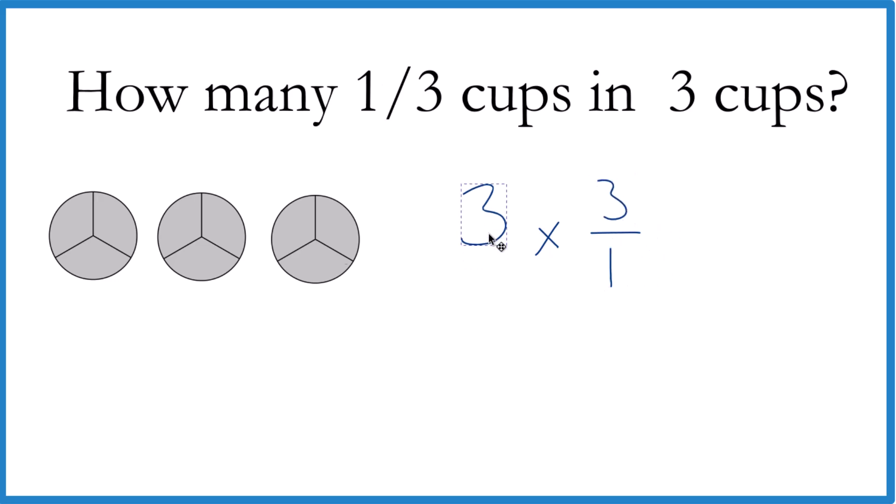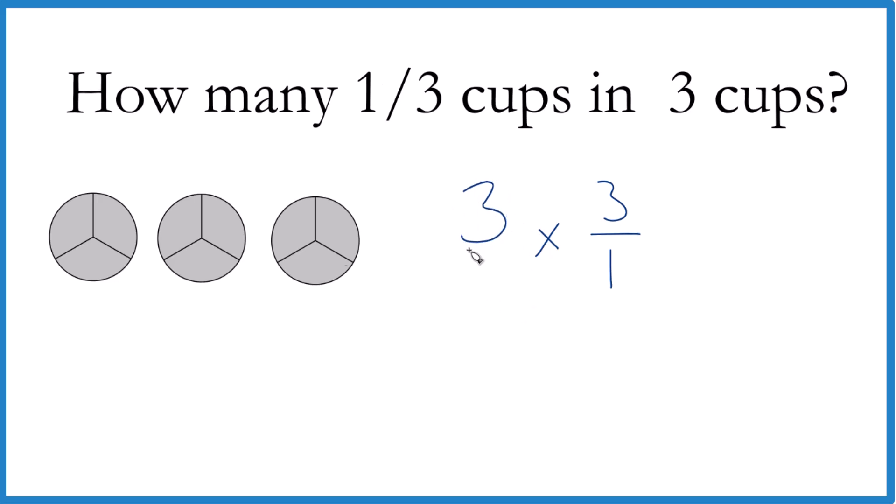And then we can think of this as three over one. Because three divided by one, it's still one. Just things line up better. Three times three is nine. One times one is one. And nine divided by one is nine. And that's what we found before.